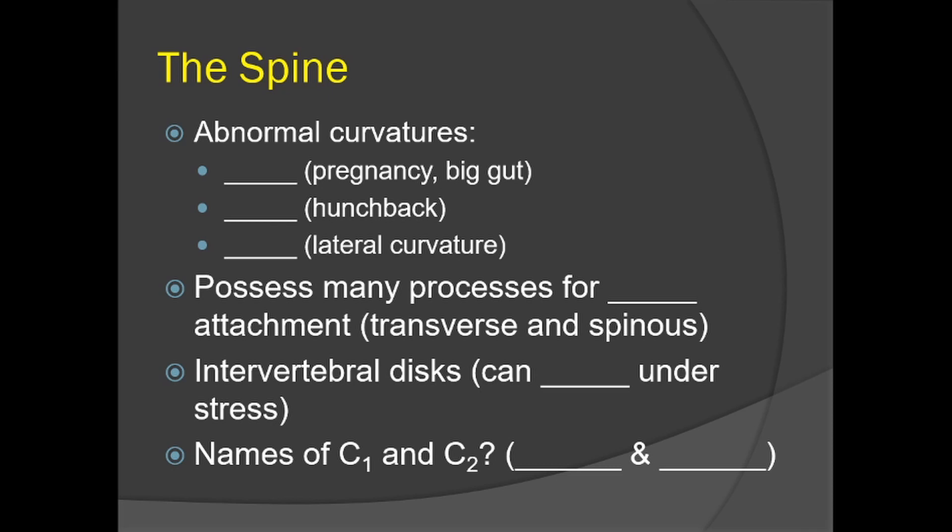The bones of the spine are called vertebrae, which possess many processes for muscle attachment. The transverse processes project out laterally to the sides, while the spinous processes project out dorsally from the vertebrae themselves.